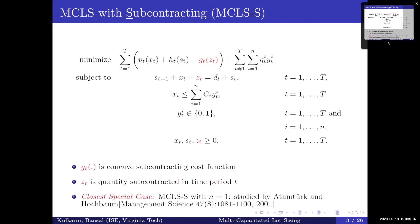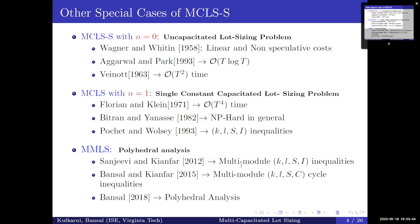One of the special cases of MCLSS is when n is equal to 1, and this was studied by Adam Bruggen-Hochbaum in 2001. When n is equal to 0, the problem reduces to the uncapacitated lot sizing problem, and for n equal to 1, MCLSS reduces to CLSP. MMLS is a variant of MCLSS where the binary variables are not binary but are integer.